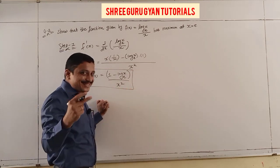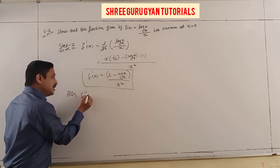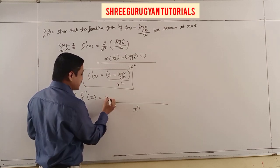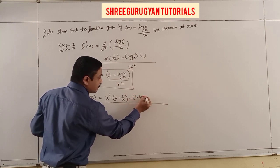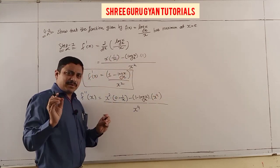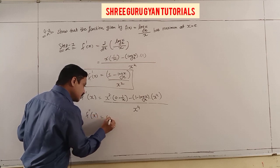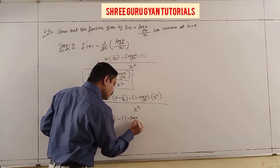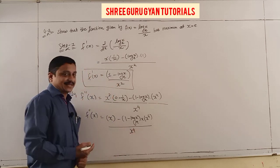Now going to the second order derivative f''(x). Using the quotient rule again on (1 - log x)/x²: denominator is x⁴. Numerator: x²·(-1/x) - (1 - log x)·2x, simplified over x⁴.